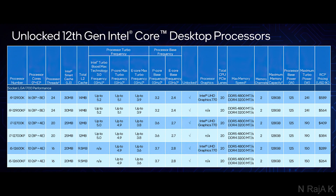The i7-12700K has 12 cores: 8 Performance Cores and 4 Efficient Cores, with 20 threads. L3 cache is 25 MB, L2 cache is 12 MB. Boost frequency is 5.0 GHz; Performance Core boost is 4.9 GHz, base is 3.6 GHz. Efficient Core boost is 3.8 GHz, base is 2.0 GHz. PCIe lanes: 20. Memory support is the same — DDR5 and DDR4. Base power is 125W, maximum is 190W. Price is $409.